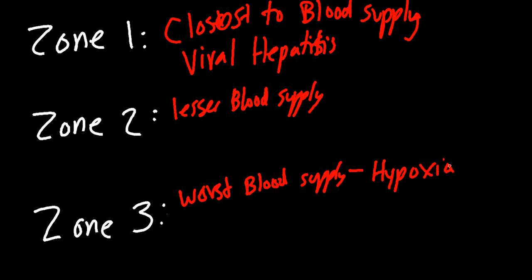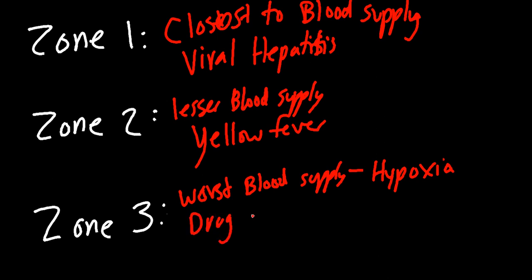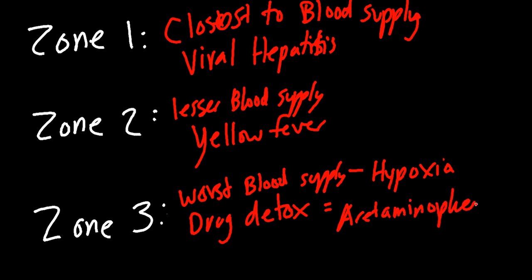Zone three, the pericentral zone, has the worst blood supply and is most sensitive to hypoxia — it will die off first in low-oxygen states. Zone three also has the most active drug detoxification system, including cytochrome P450 enzymes. This makes it most sensitive to acetaminophen poisoning: toxic metabolites of acetaminophen accumulate here, killing off zone three cells. So Tylenol toxicity specifically affects zone three.